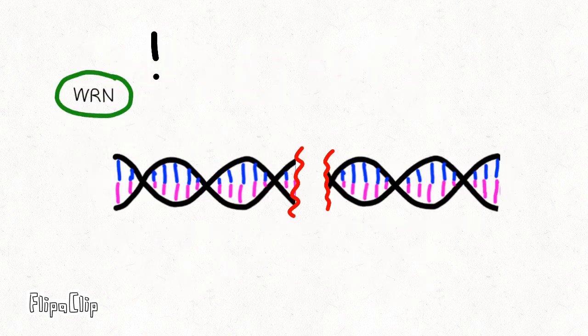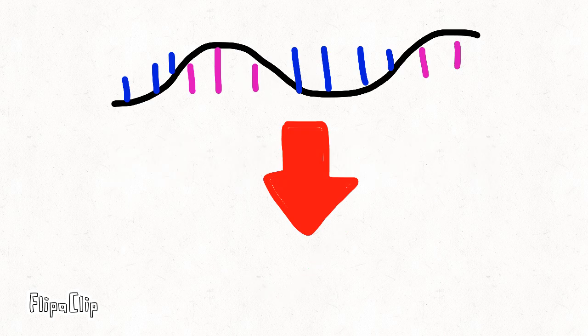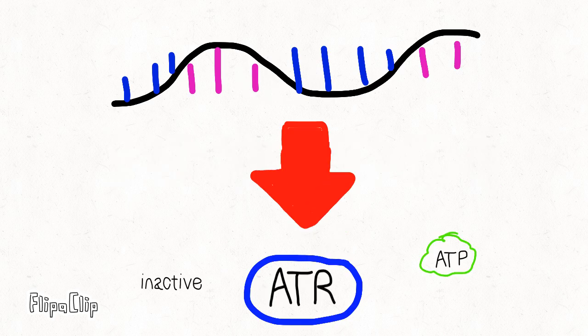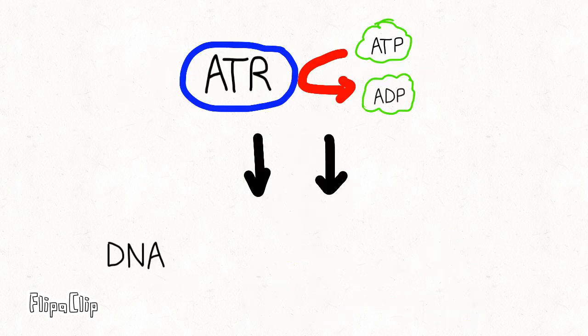which is a common intermediate in DNA damage detection and repair. The persistent single-stranded DNA is the signal that activates a protein kinase called ATR, which activates the DNA damage checkpoint.